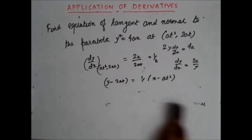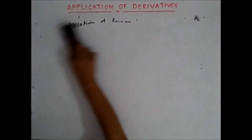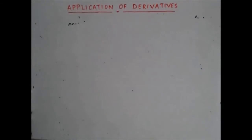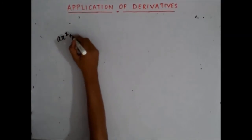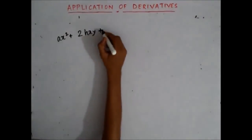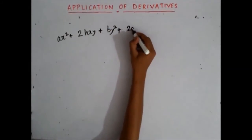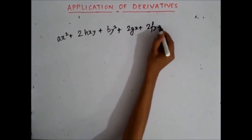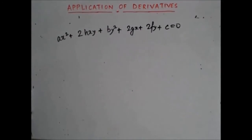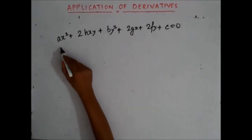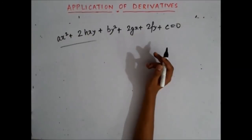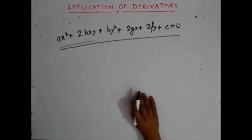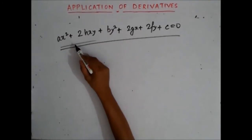Now there's a useful trick I want to share. If you have a standard curve given by ax² + 2hxy + by² + 2gx + 2fy + c = 0, this is the standard equation from which you can derive the equation of any conic section — parabola, hyperbola, ellipse, or circle. If you are asked to find the equation of the tangent at any point on this curve, the trick is very simple — you need not find the slope explicitly.